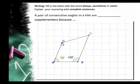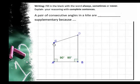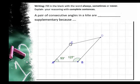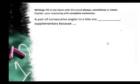So can the two consecutive angles for a kite be supplementary? Hopefully you realize that they cannot. A pair of consecutive angles in a kite are never supplementary because